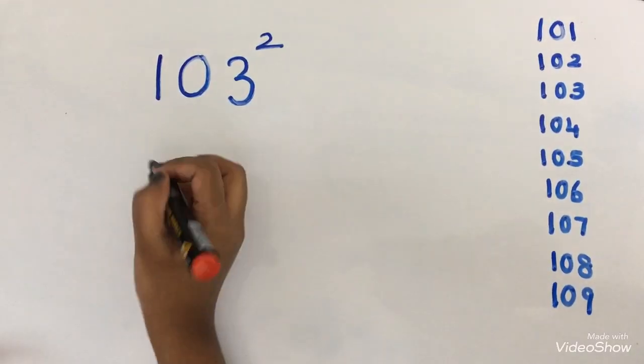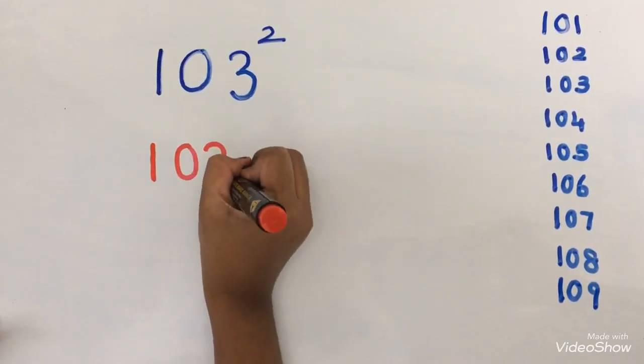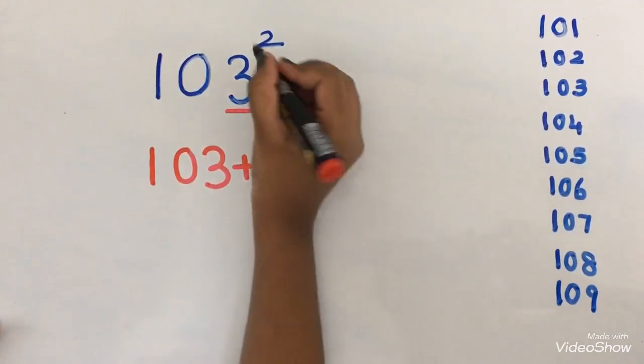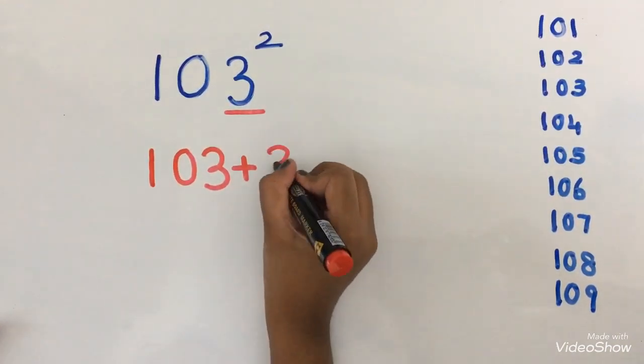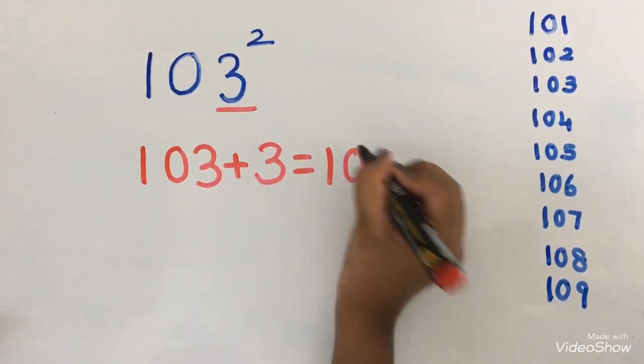Now I am going to write this number: 103. Now we should place the ones digit. The ones digit is 3. So I am going to write 3 over here. So the answer is 106.